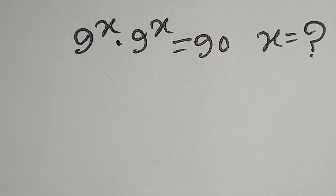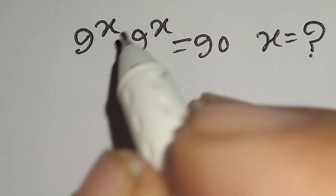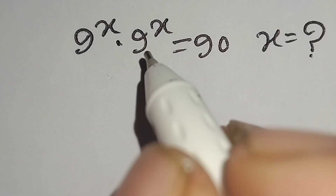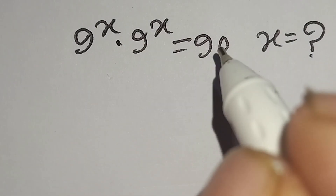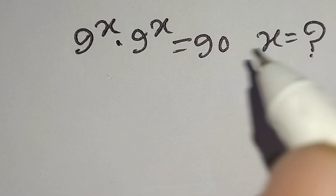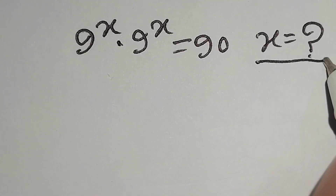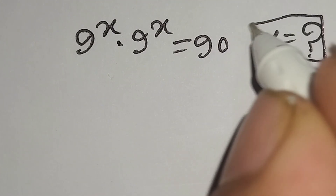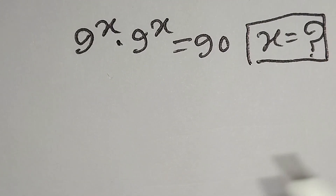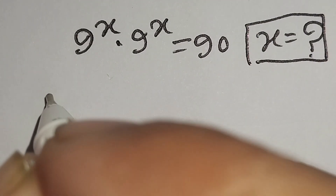Hello, this is a nice math problem. 9 to the power x times 9 to the power x is equal to 90, and we have to find the value of x. So let's start the solution.